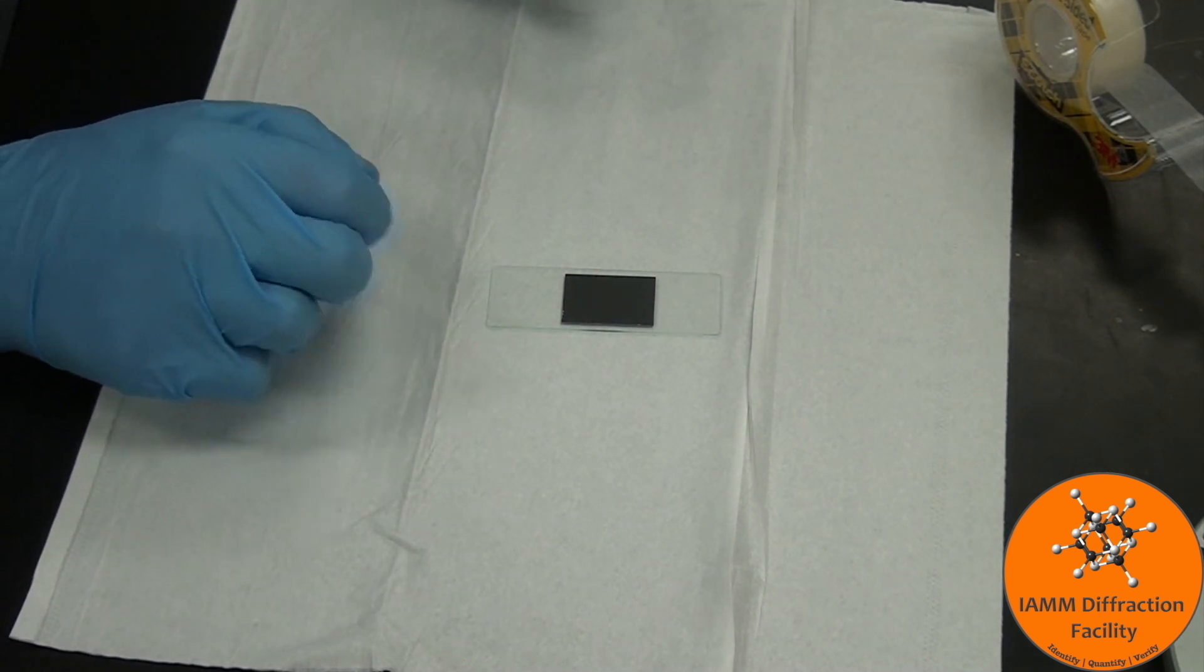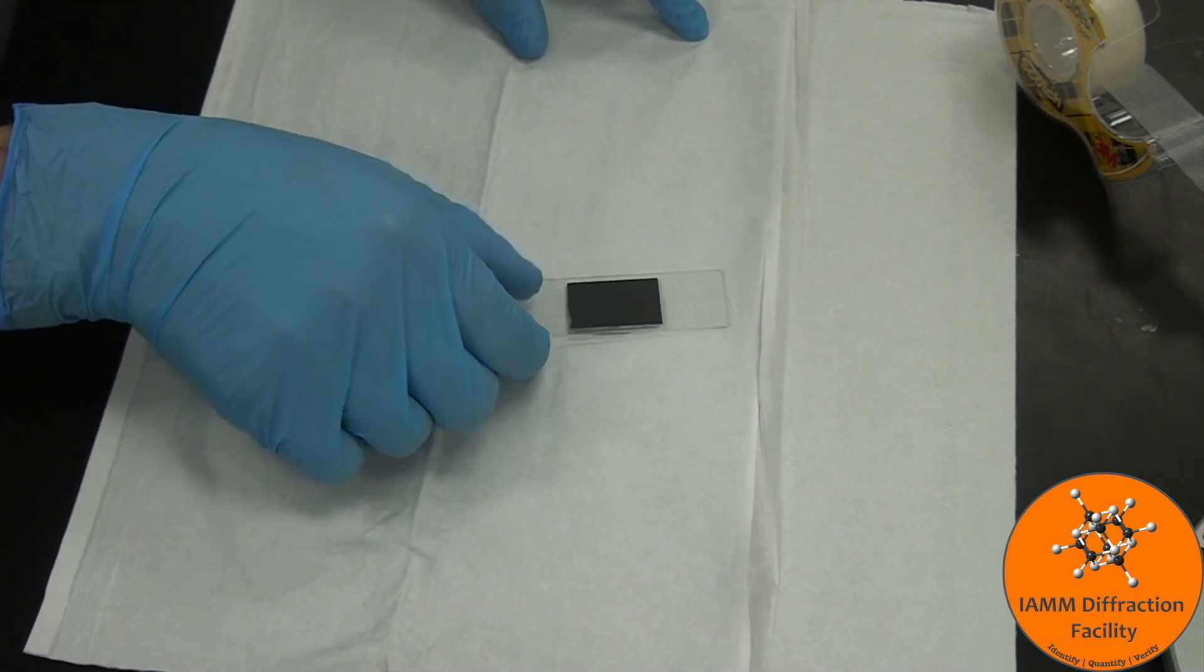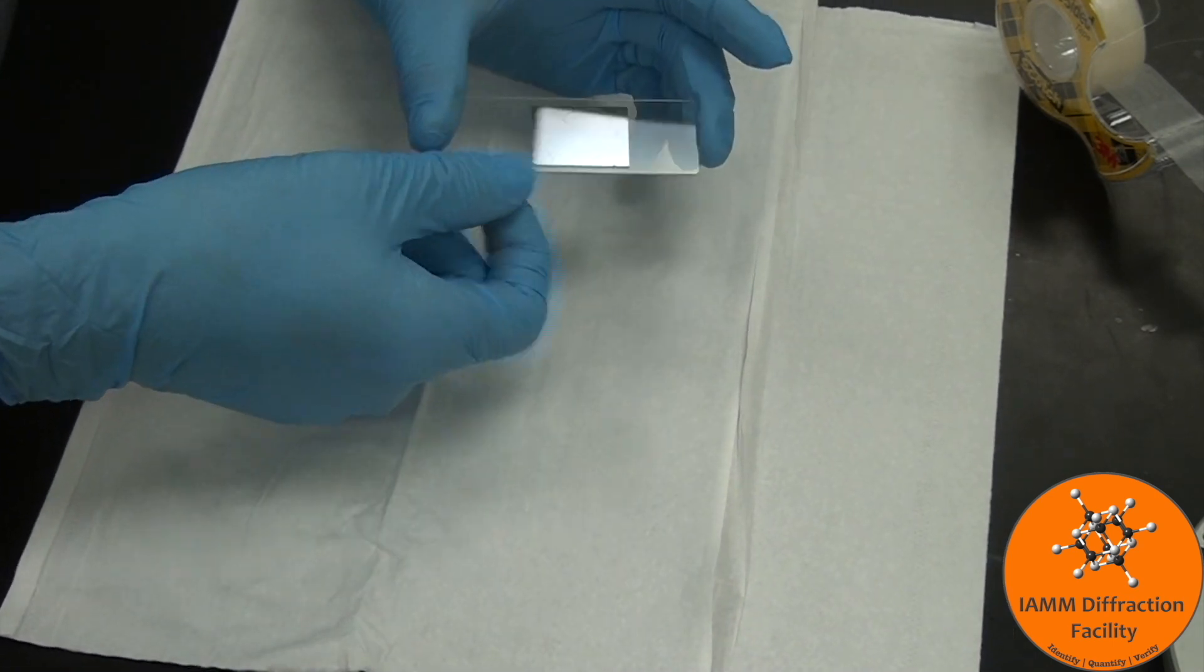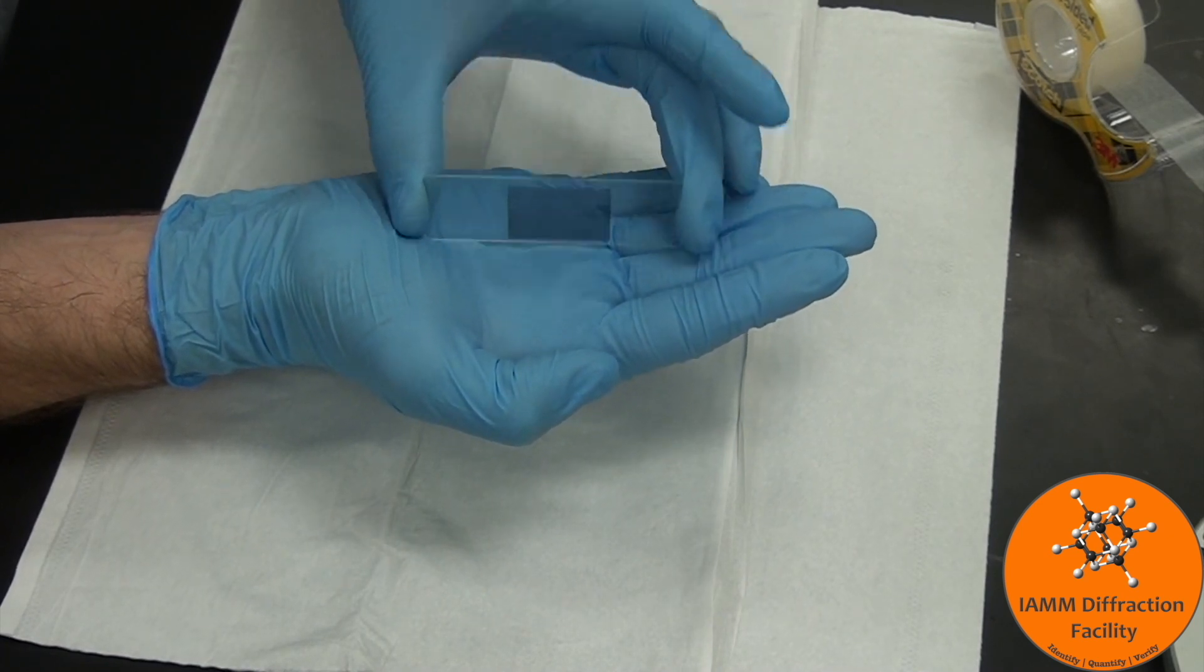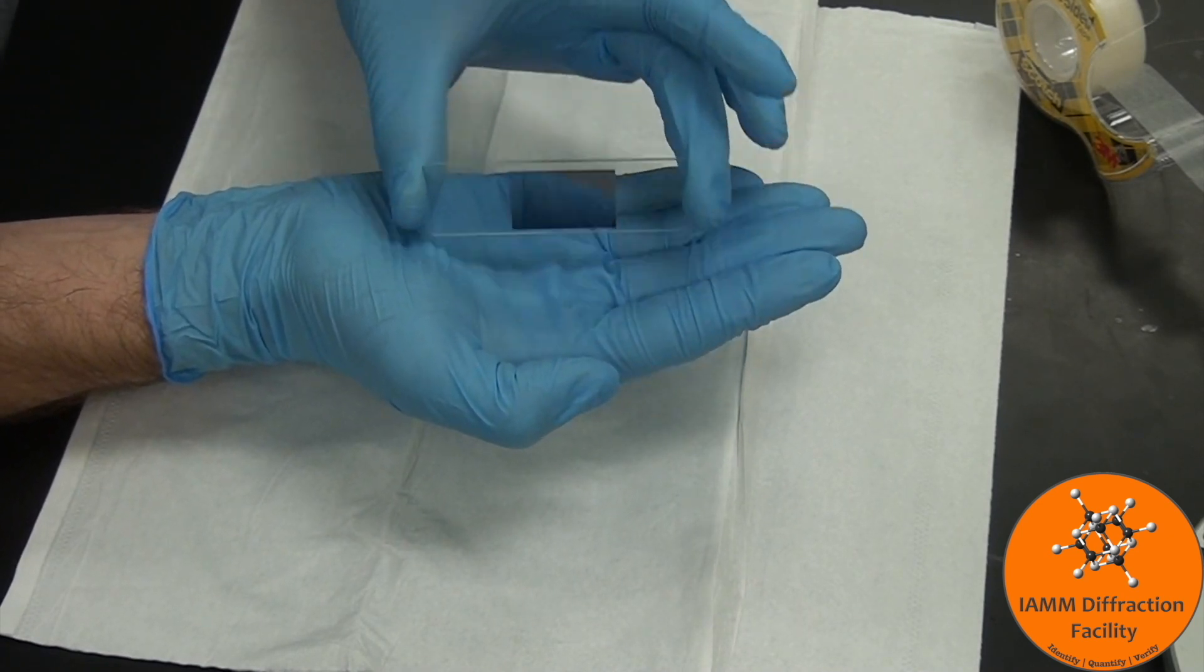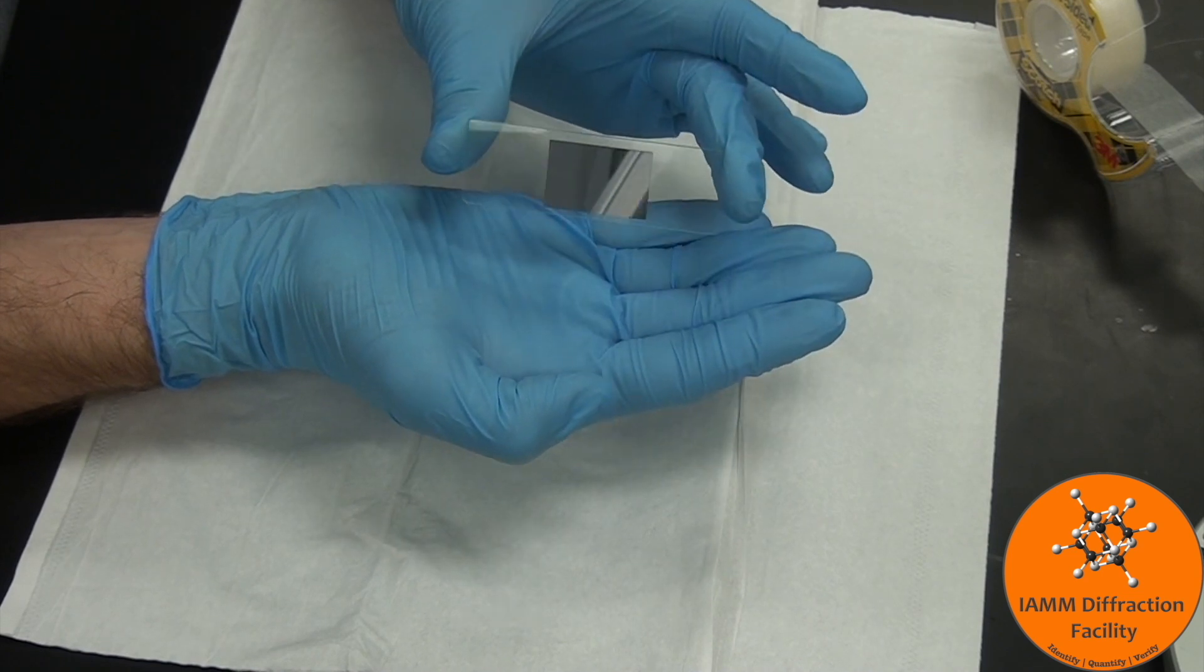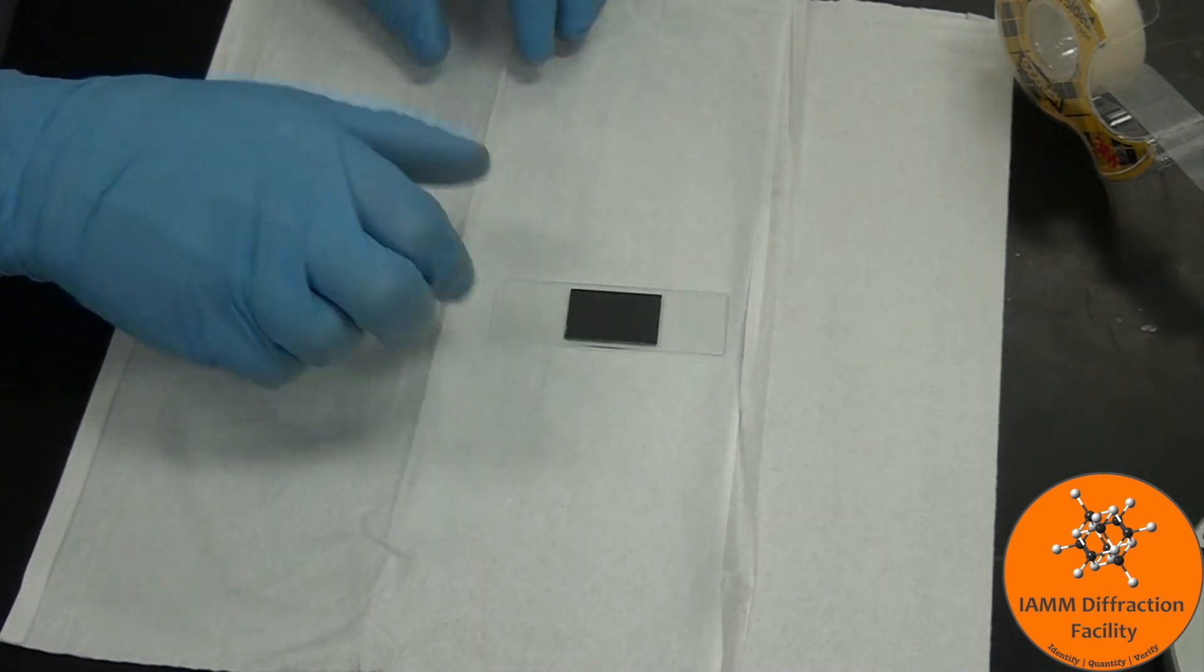Before I load this into the chamber to start testing it, I typically pick it up, hold my hand underneath, and then shake the sample a little bit to see if it is going to fall off. That looks good, so we are now ready to load the sample into the chamber.